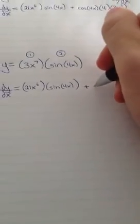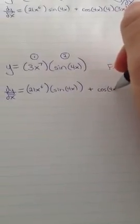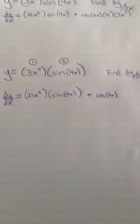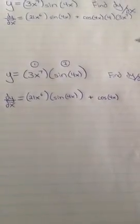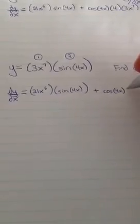Plus the derivative of the second, which the derivative of any sine function is cosine of that same function. So we have cos of 4x. Now here's where the chain rule comes in. 4x is also a function of x, so we need to multiply by the derivative of whatever that function is. So the derivative of 4x is 4.